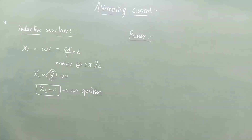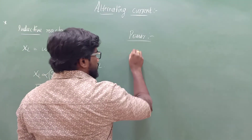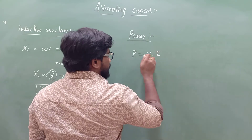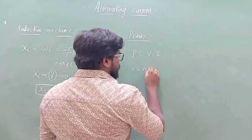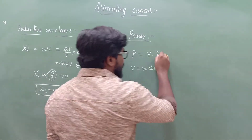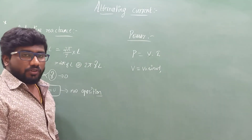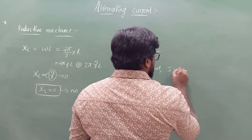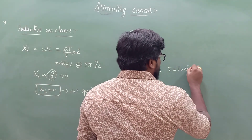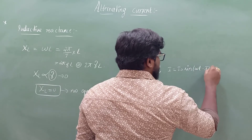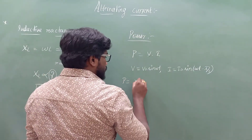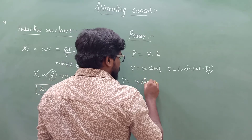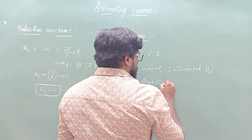Now we need to find the value of power in a purely inductive circuit. We know the expression for power: P = v × i. The value of v is given by v = V₀ sin(ωt). The value of i was derived in the previous video: i = I₀ sin(ωt − π/2). Substituting these two values, P = V₀ sin(ωt) × I₀ sin(ωt − π/2).